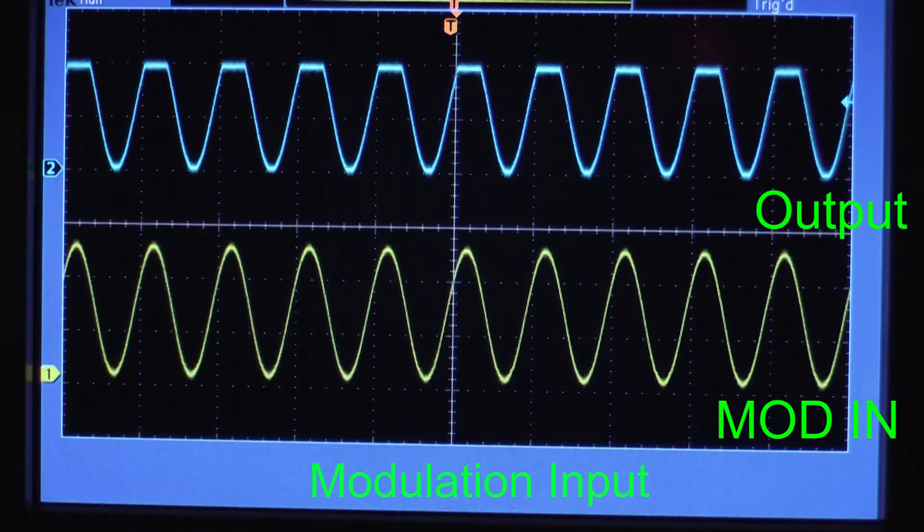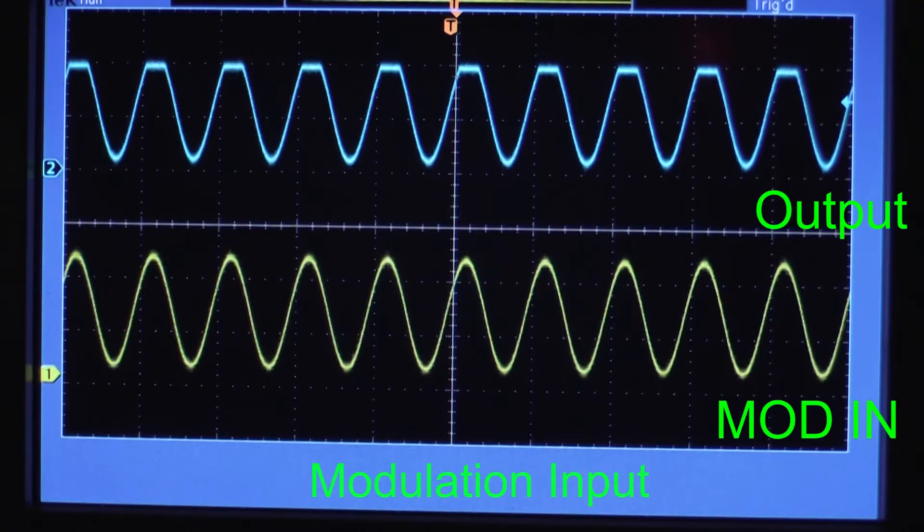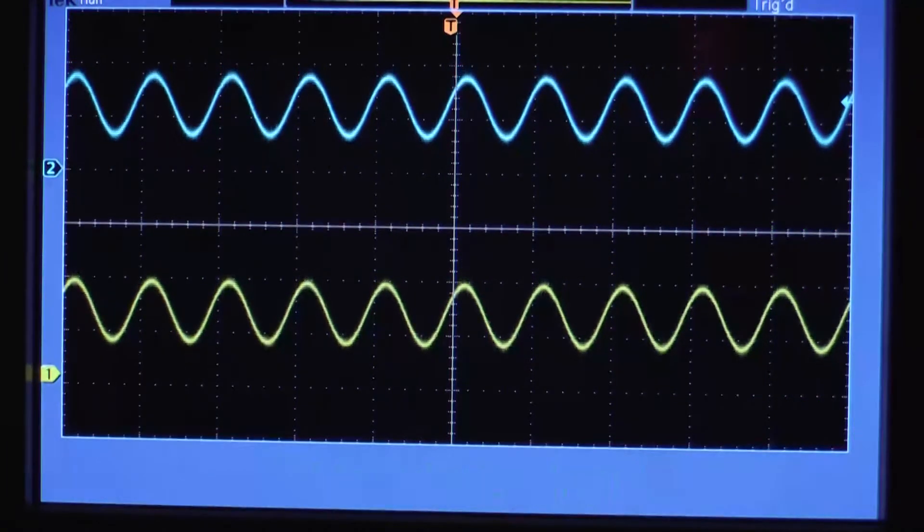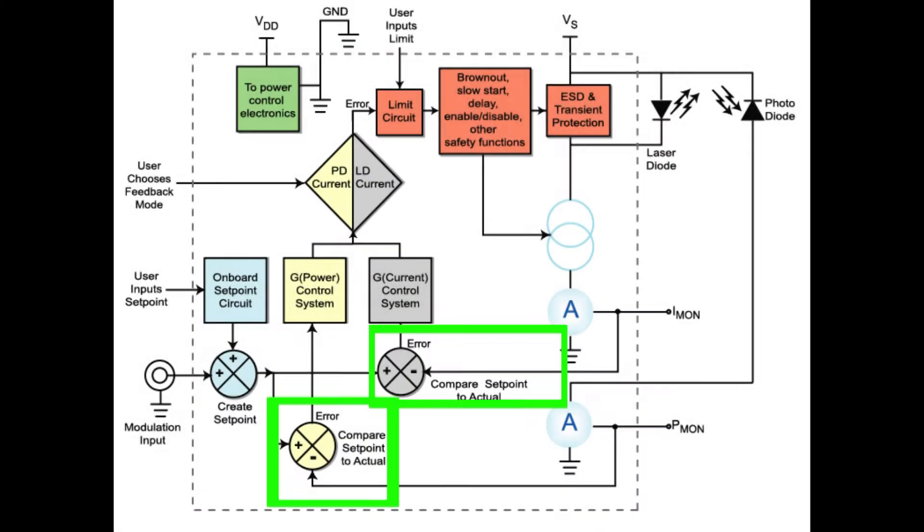This voltage signal is related to the actual current or power output by a transfer function. Summing amplifiers are used to measure the difference between setpoint and actual current, or to sum the onboard setpoint with an external analog modulation signal.